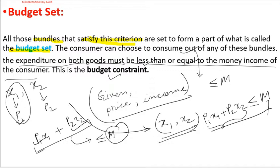This budget constraint is given as equation 2.1 in your book. Please keep your book open whenever you watch the video. That covers the budget set — now let's move to the budget line.